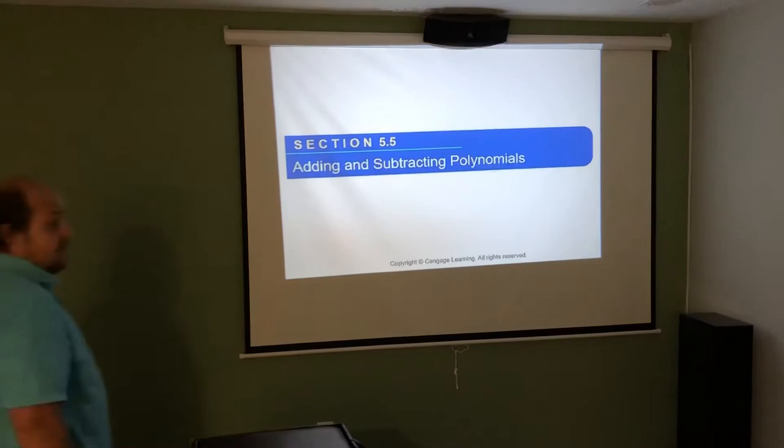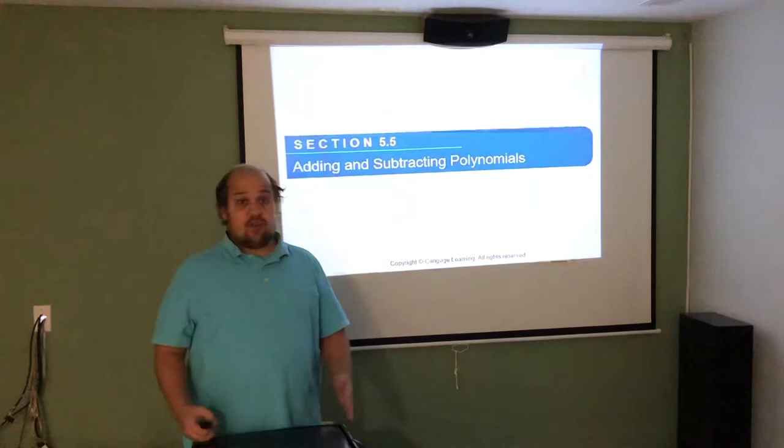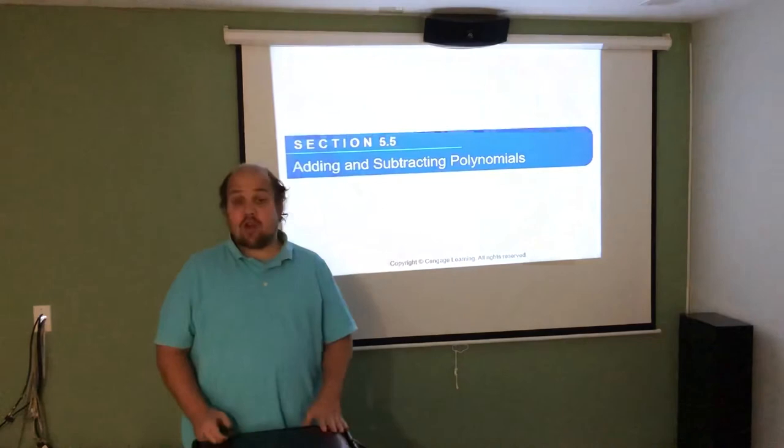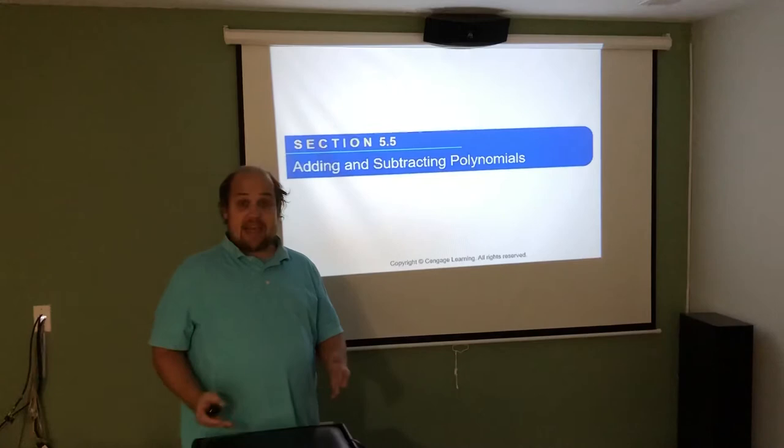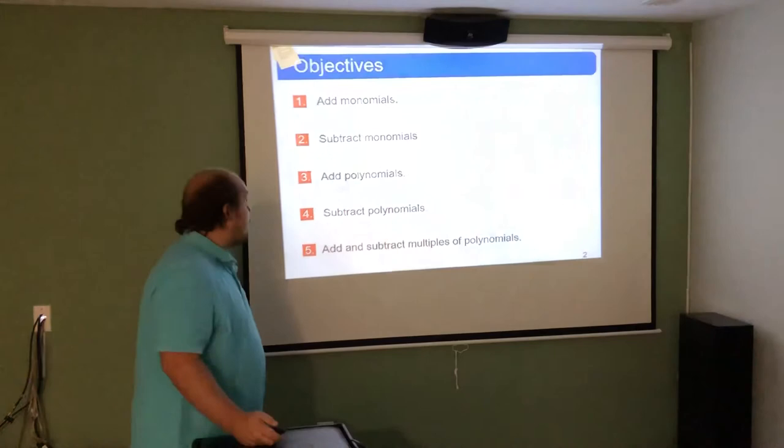Section 5.5 deals with adding and subtracting polynomials. The key thing to remember is understanding like terms — we want to figure out which terms are like terms and combine them. Not only do terms need the same variable, but they also need the same variable to the same exponent. When things have the same variable to the same exponent, we can add and subtract them. When they do not, we have to leave them separate.